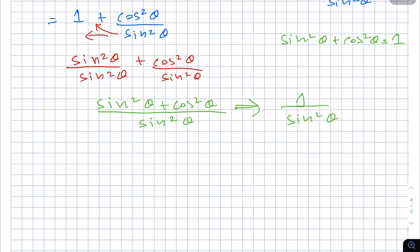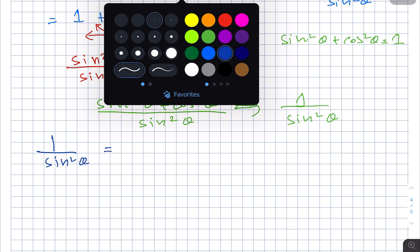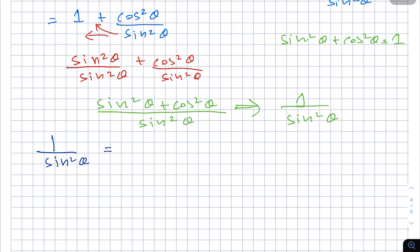that 1 over sin²θ equals cosecant squared θ. And that's our final answer. Thank you for joining us. I hope to see you in the next lesson.